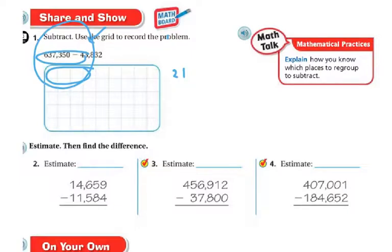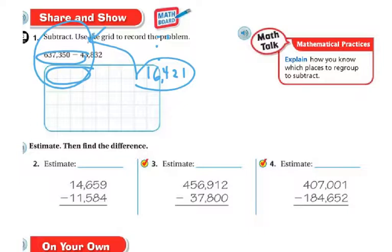5 plus 8 is 13, plus the carried 1 is 14, so I put my 1 here to carry. Now I have 4 plus 1 plus 1 is 6. And as you can see, those matched, so I know this was the correct answer — just a way to use addition to check your subtraction.